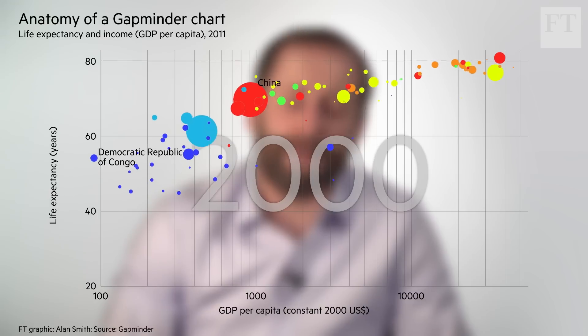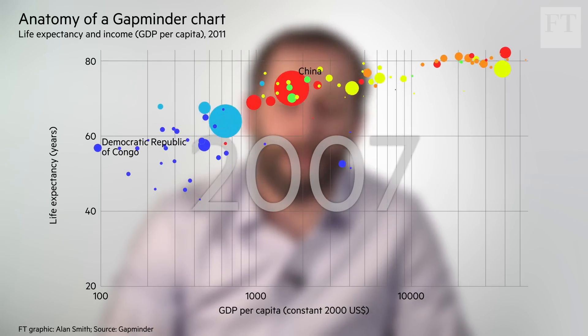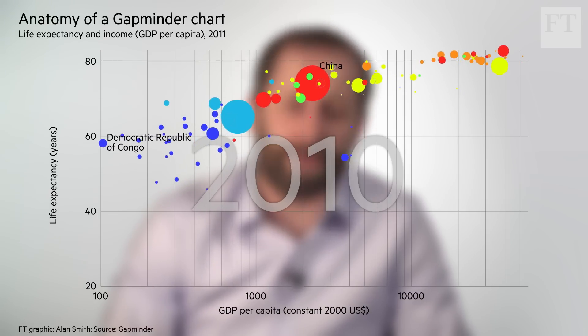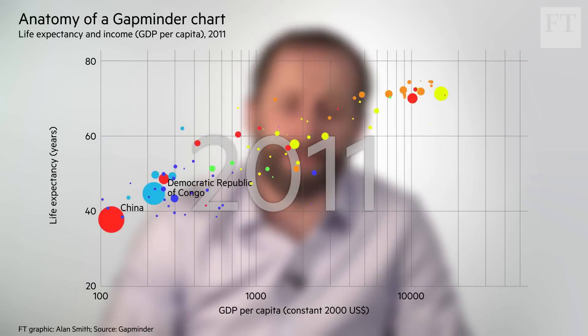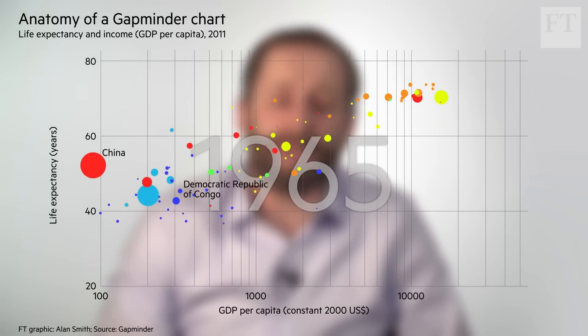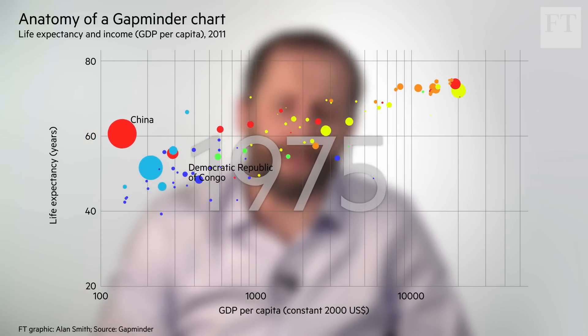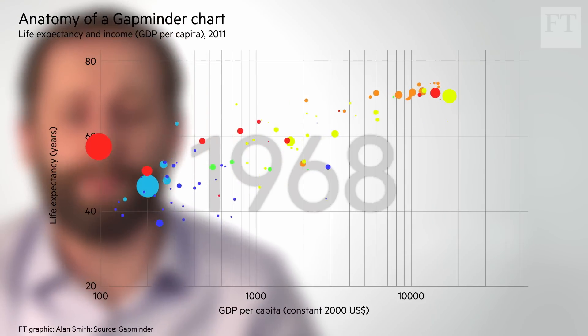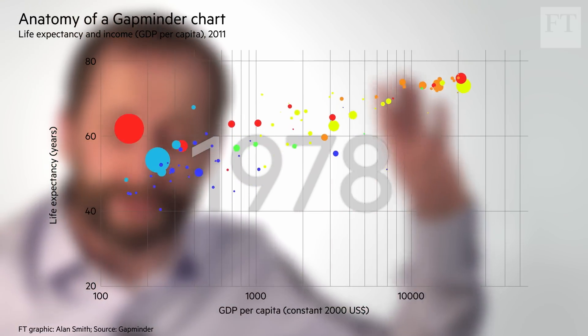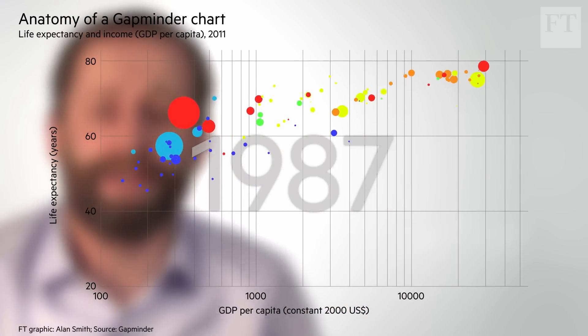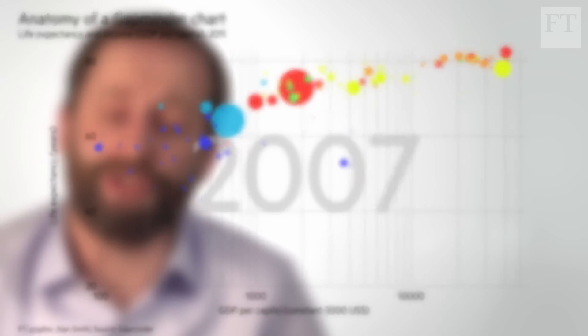Contrast that with the Democratic Republic of Congo, which goes on a very different trajectory. The animation also shows us something that Rosling was very passionate about — that the world is getting better. We can see on the chart, as the bubbles rise upwards and to the right, that people in the world are generally getting wealthier and living longer.